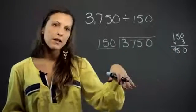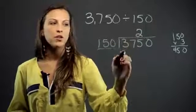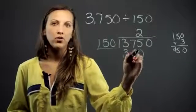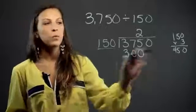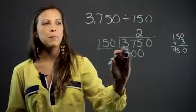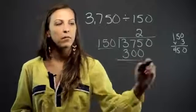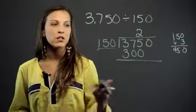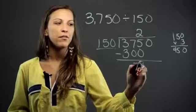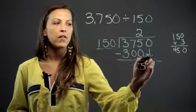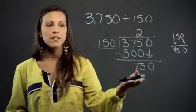So the next number down will probably work. So we try 2. And when we do 2 times 150, we get 300. So it's a little bit of trial and error on the side with deciding how many times this big number will go into 375. But once we find the right number, we follow the same steps as long division. 375 minus 300 gives us 75, and now we bring down the next 0. So now again, we have 150 into 750.